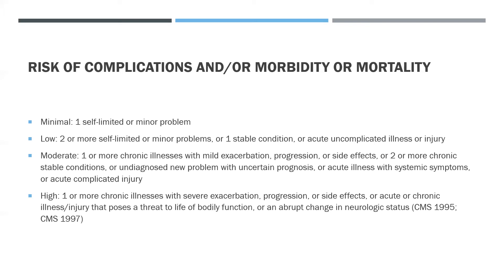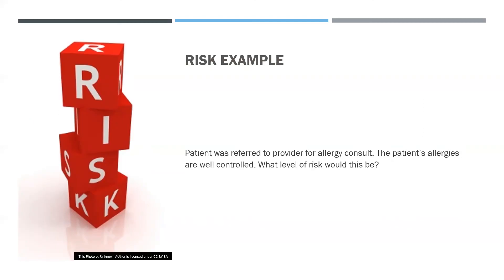Moderate risk includes one or more chronic illnesses with mild exacerbation, progression, or side effects; or two or more chronic stable conditions; or an undiagnosed new problem with uncertain prognosis; or acute illness with systemic symptoms; or acute complicated injury. High risk includes one or more chronic illnesses with severe exacerbation, progression, or side effects; or acute or chronic illness or injury that poses a threat to life or bodily function; or an abrupt change in neurological status. In the risk example, a patient referred for an allergy consult with well-controlled allergies would be low risk — one stable chronic condition.